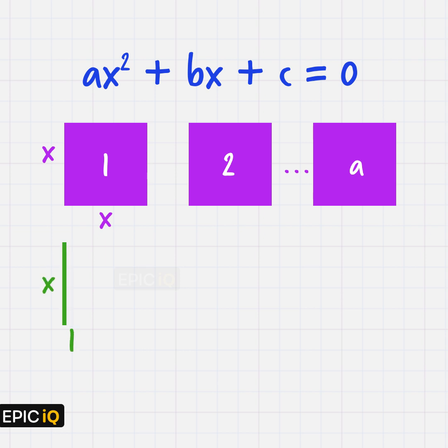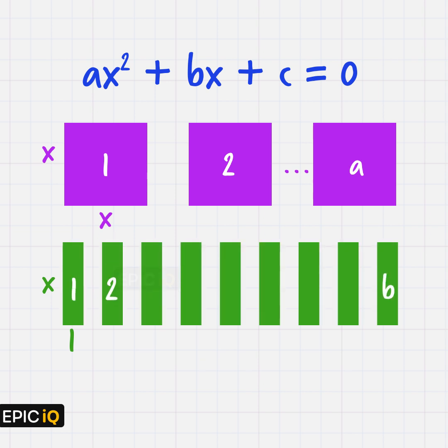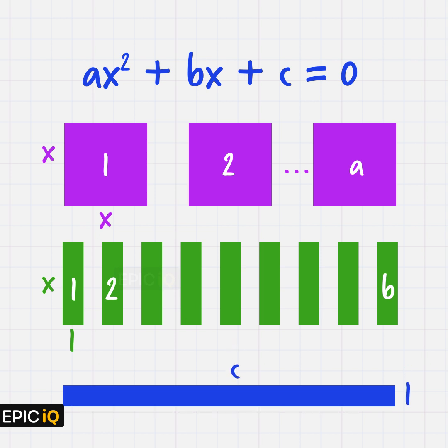x will be represented by a rectangle with sides x and 1. And we have b number of these rectangles. c is represented by a rectangle with sides c and 1.